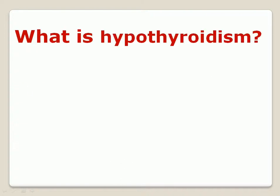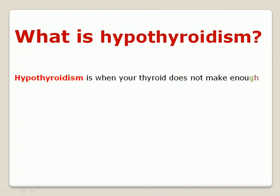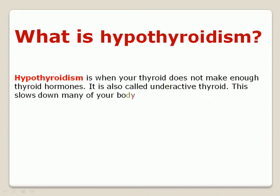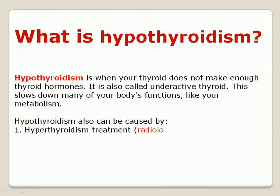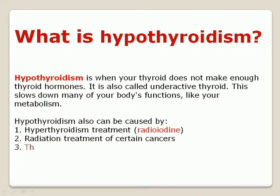What is hypothyroidism? Hypothyroidism is when your thyroid does not make enough thyroid hormones; it is also called underactive thyroid. This slows down many of your body's functions like your metabolism. Hypothyroidism can also be caused by: 1) hyperthyroidism treatment with radioiodine, 2) radiation treatment of certain cancers, and 3) thyroid removal.